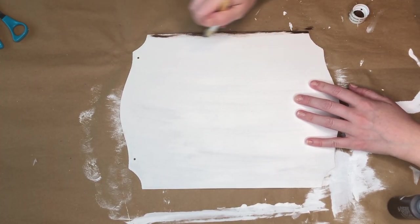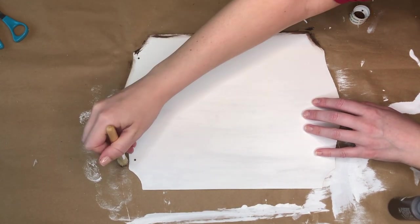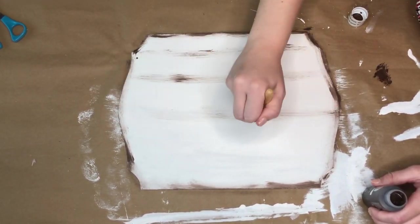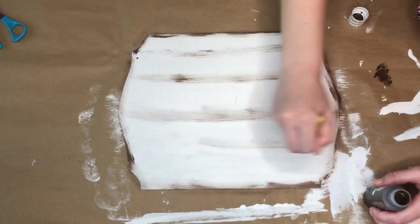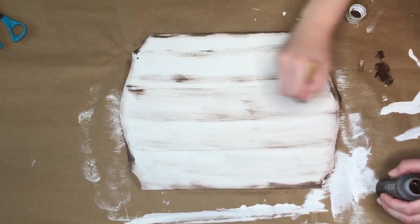Then I wanted it to kind of have a wood look to it, a little shiplappy, so I took some of my dark brown paint from Apple Barrel and I am just going all around the edges and kind of creating lines to mimic wood all down the center section of my sign.